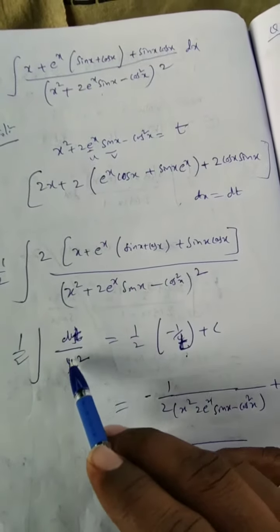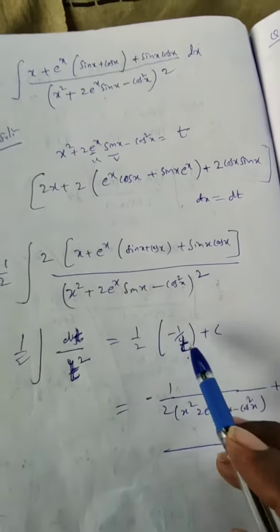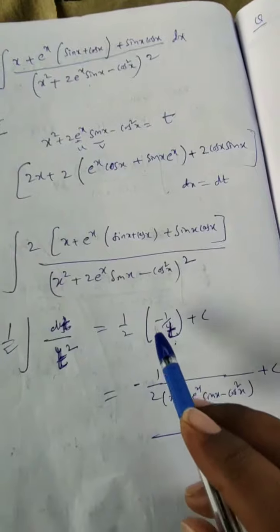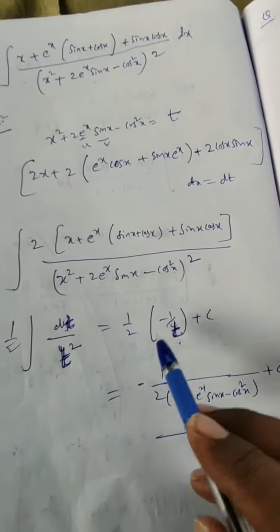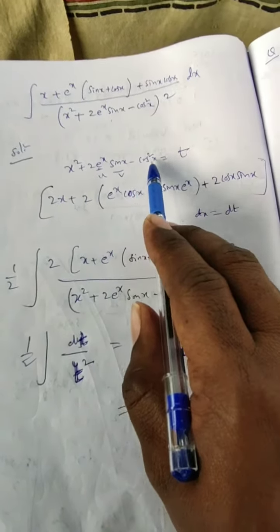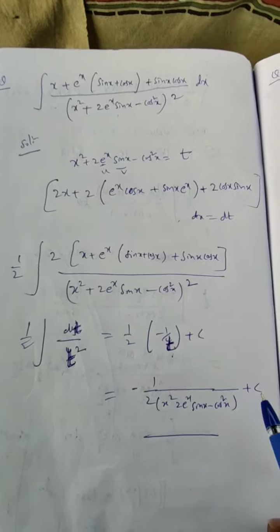1/2 ∫1/t² dt. What is the integration of 1/t²? 1/t² integration is -1/t + c. So this is equal to -1/(2t). What is t? We consider this whole thing x² + 2e^x sin x - cos² x. So this whole thing plus c. This is the answer. Thank you.